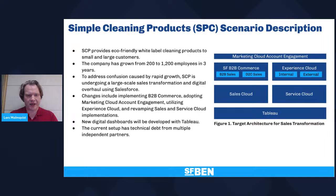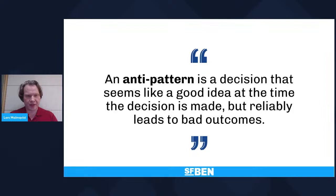So what went wrong here? If you've been around Salesforce implementations for a while, you probably recognized a few of the events described. It's a constructed example, but I've personally seen pretty much all of these elements happen on one project or another. The reason why some of these events might seem familiar is that I've constructed this story based on common anti-patterns from the world of Salesforce implementations. So what is an anti-pattern? My favorite definition is that an anti-pattern is a decision that seems like a good idea at the time you make it but reliably leads to a bad outcome.